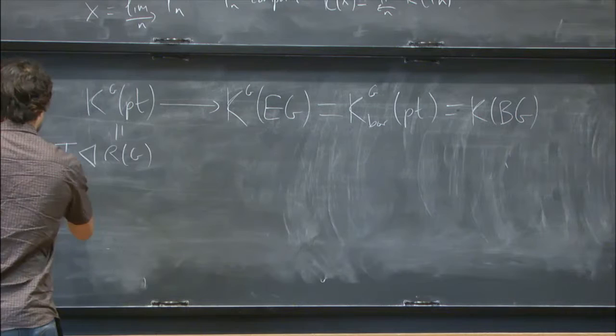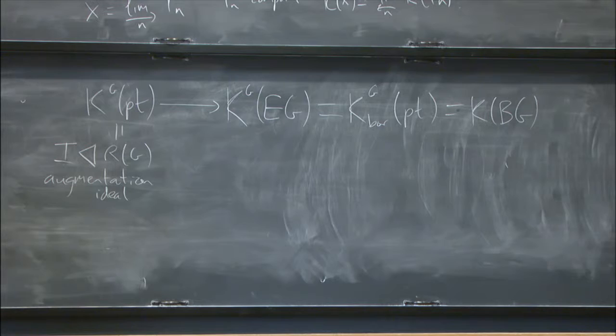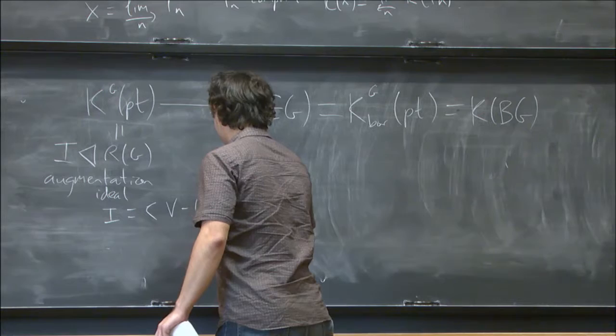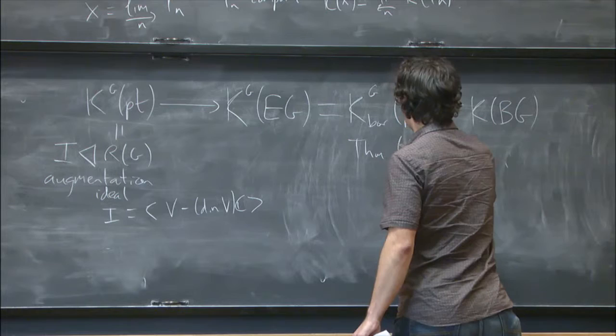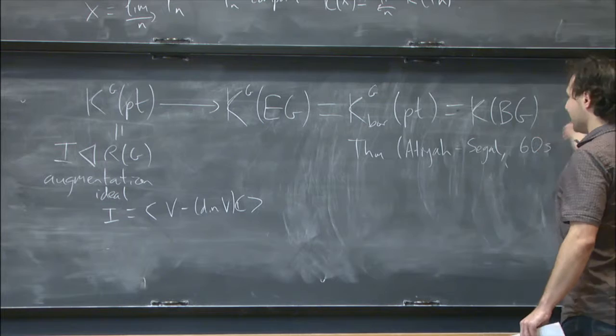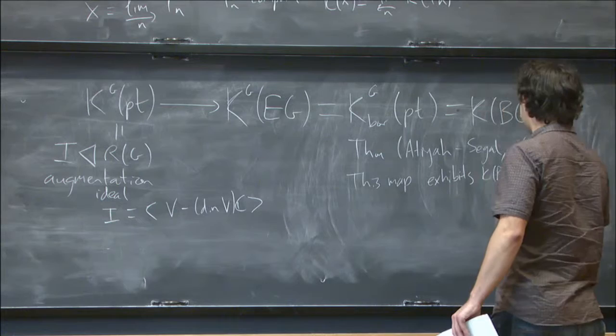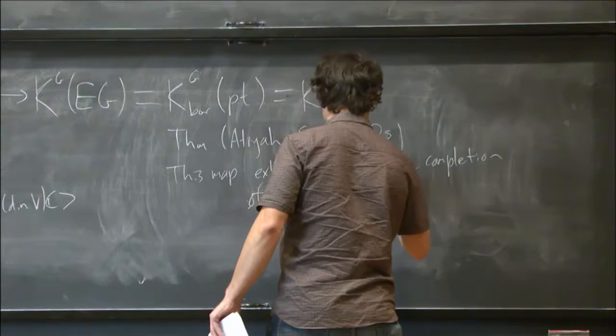Well, there's an ideal in here, called the augmentation ideal, which is simply the kernel of the map from R of G to the integers that takes a representation to its dimension. So it's generated by things like V minus dim V times the trivial representation, where V is any representation. And the statement of the Atiyah-Segal completion theorem, which was in the 60s, is that this map exhibits the K-theory of BG as the completion of R of G at the augmentation ideal.